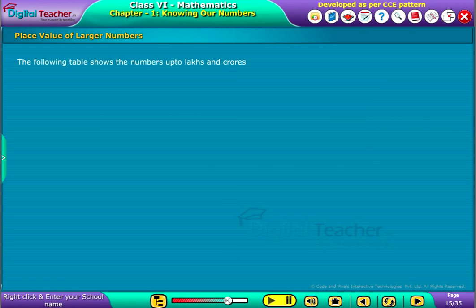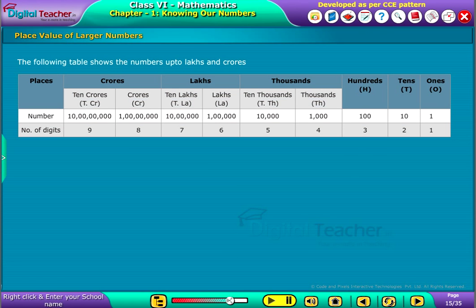The following table shows the numbers up to lakhs and crores. From the above table, we observe that 1 crore is equal to 100 lakhs, which is in turn equal to 10,000 thousands. 1 lakh is equal to 100 thousands, which is equal to 1,000 hundreds.